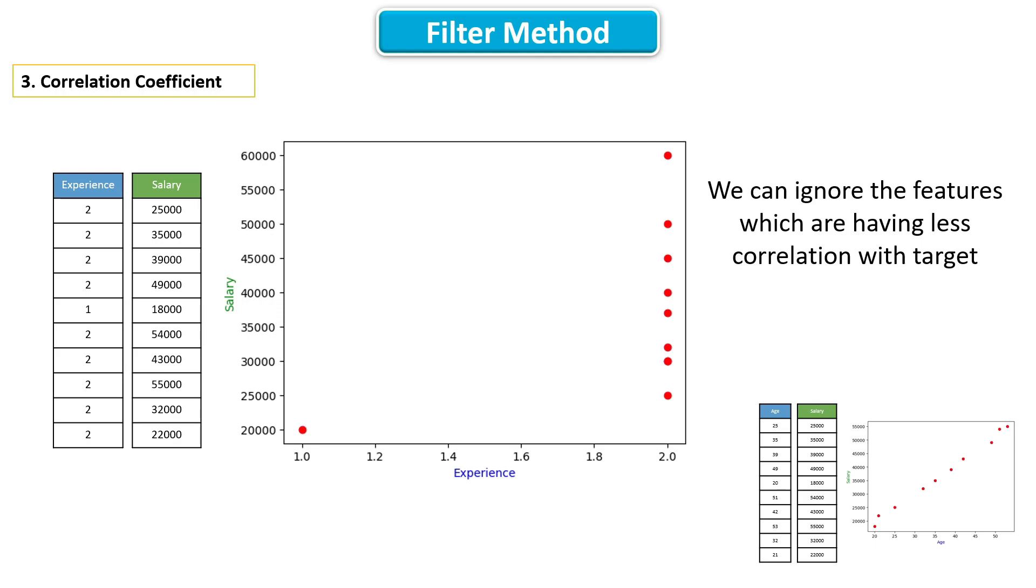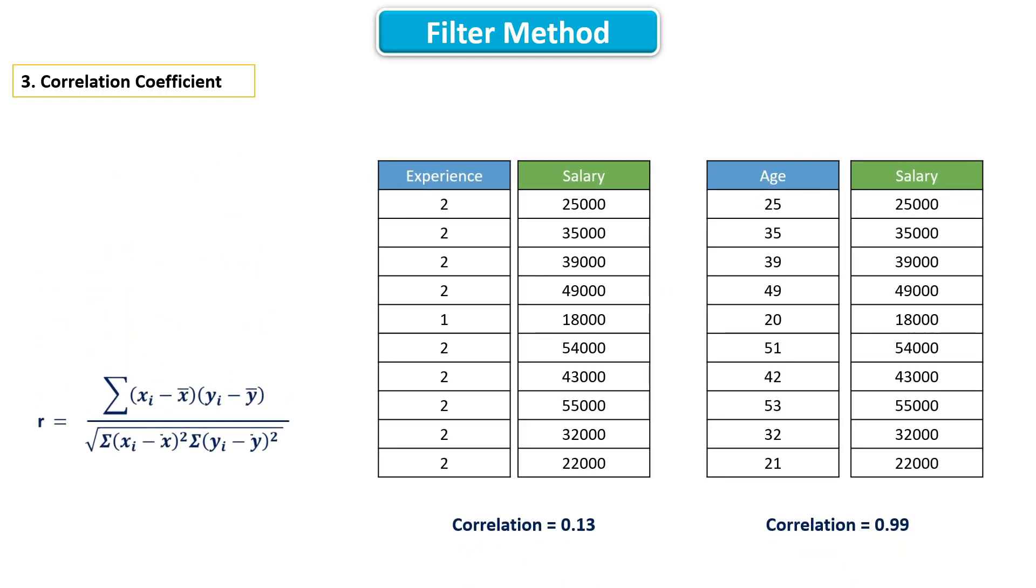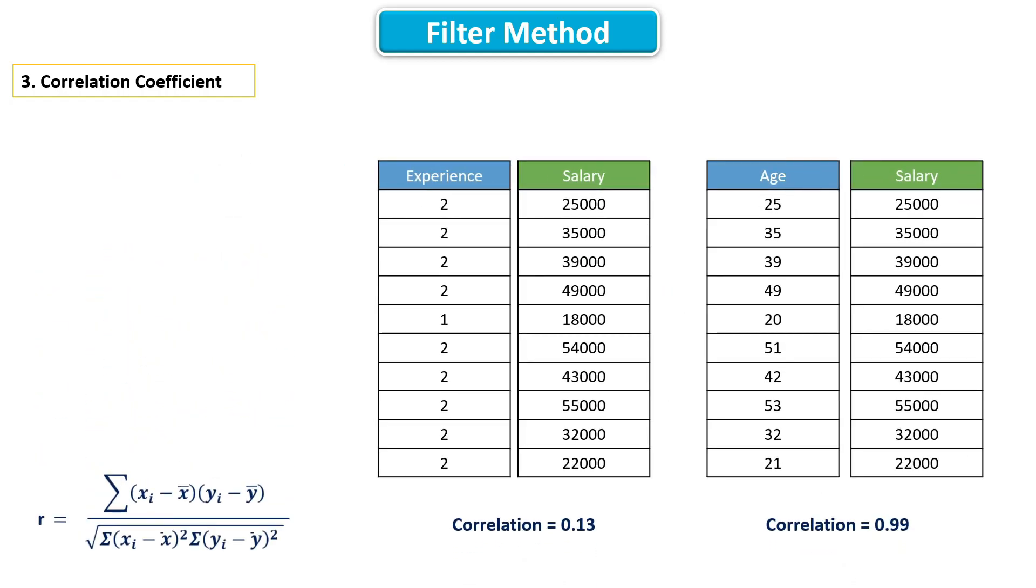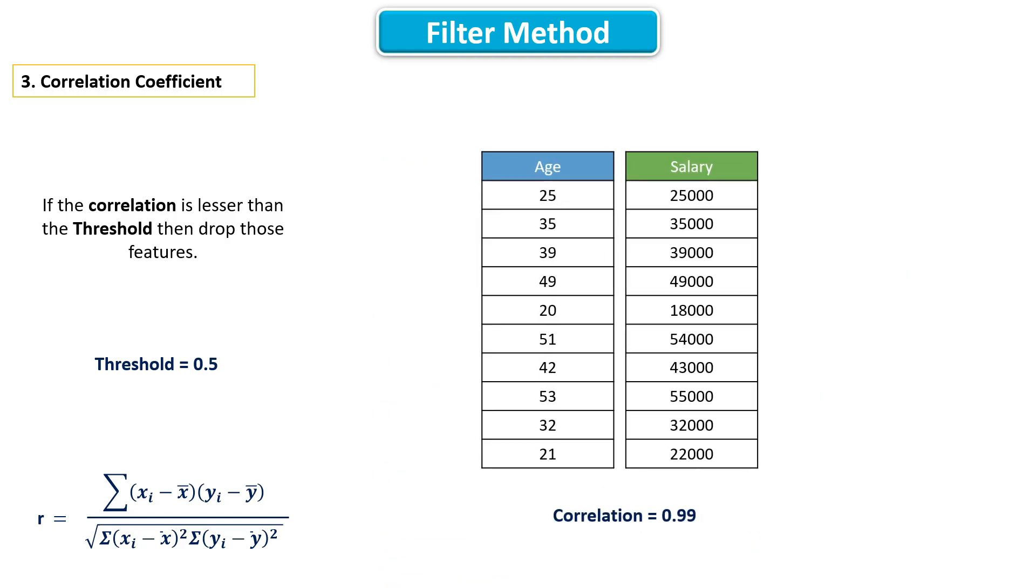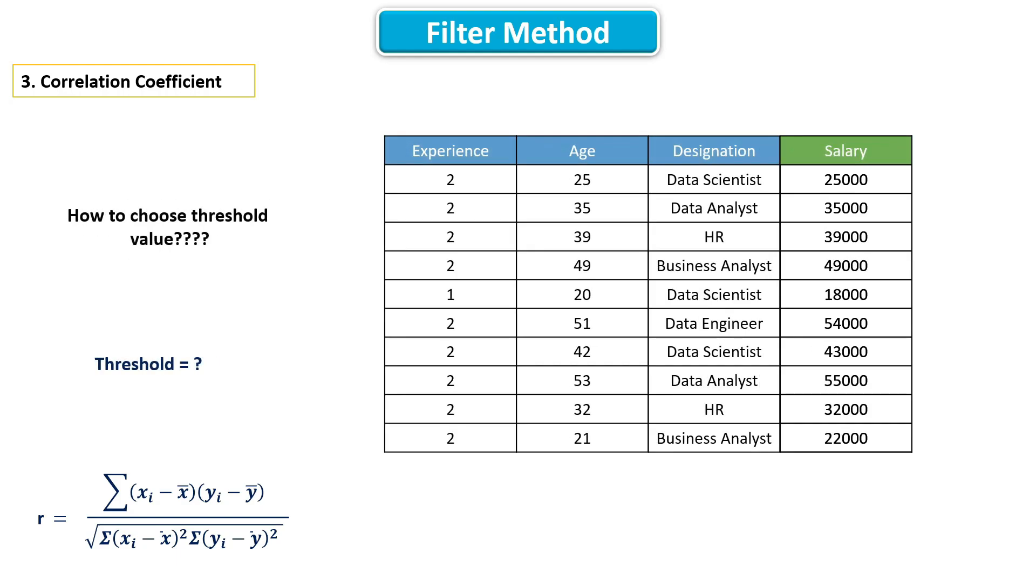Now let's see the mathematics behind correlation coefficient. First we have to calculate correlation between all the numeric features and the target. And if the correlation between any feature and the target is lesser than the threshold value, we can ignore those features. For example, if the threshold value is 0.5, then this feature will be ignored. This is how correlation coefficient works. But how do we choose threshold value? Well, it's a hyper parameter. You have to try with different threshold values and you have to pick the one which works well for your dataset.